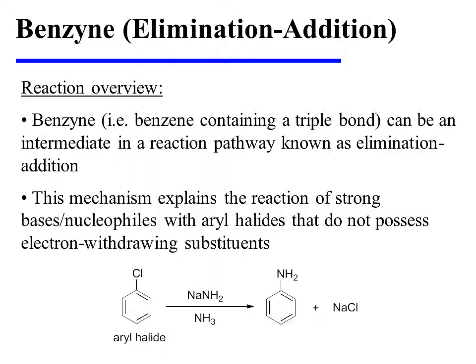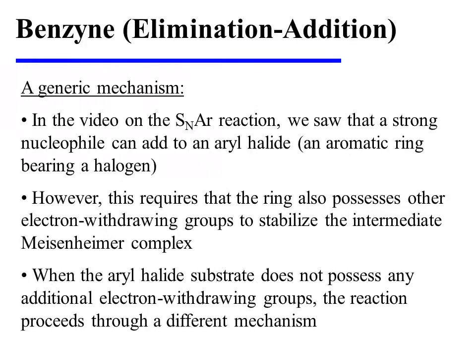Benzyne, or a benzene ring containing a triple bond, can be an intermediate in a reaction pathway known as elimination-addition. This mechanism explains the reaction of strong bases or nucleophiles with aryl halides that do not possess electron-withdrawing substituents. In the video on nucleophilic aromatic substitution, or the SNAr reaction, we saw that a strong nucleophile can add to an aryl halide — an aromatic ring bearing a halogen. However, this requires that the ring also possesses other electron-withdrawing groups to stabilize the intermediate Meisenheimer complex. When the aryl halide substrate does not possess any additional electron-withdrawing groups, the reaction proceeds through a different mechanism.